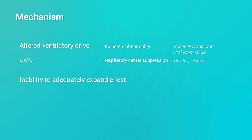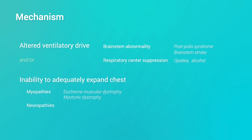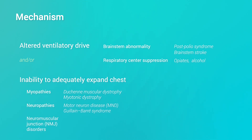On the other hand, the normal ventilatory mechanism can be impaired by conditions such as myopathies like Duchenne muscular dystrophy and myotonic dystrophy, neuropathies — for example, motor neuron disease and Guillain-Barré syndrome — and neuromuscular junction abnormalities, for example, myasthenia gravis.